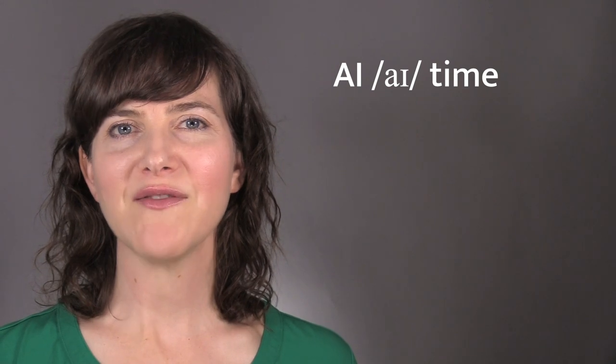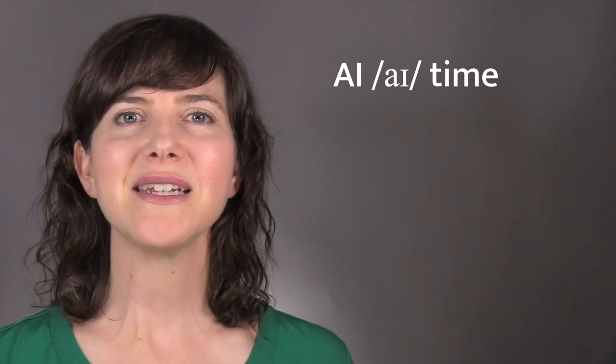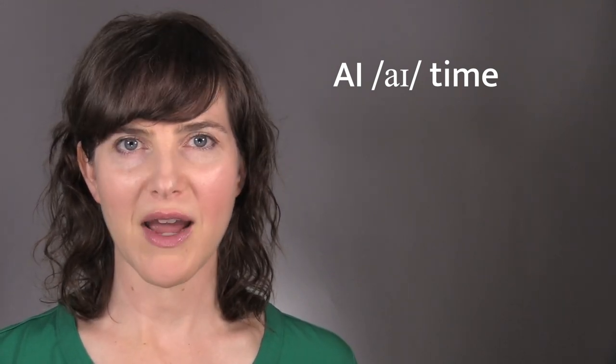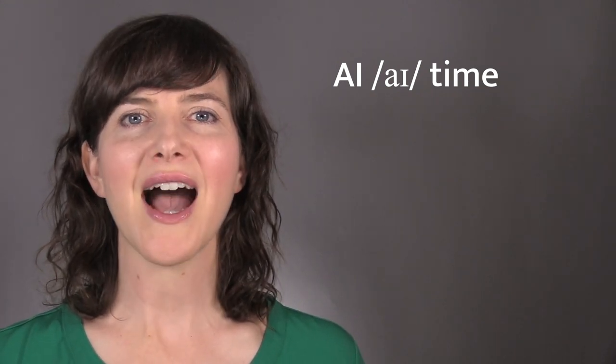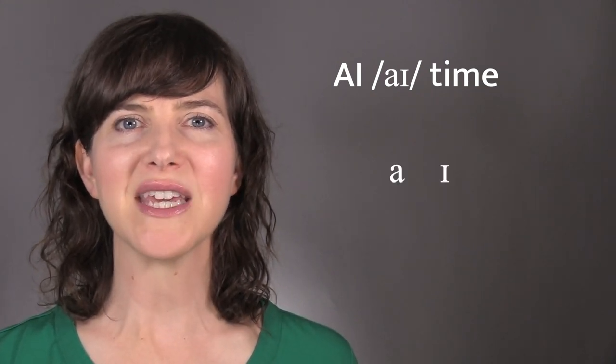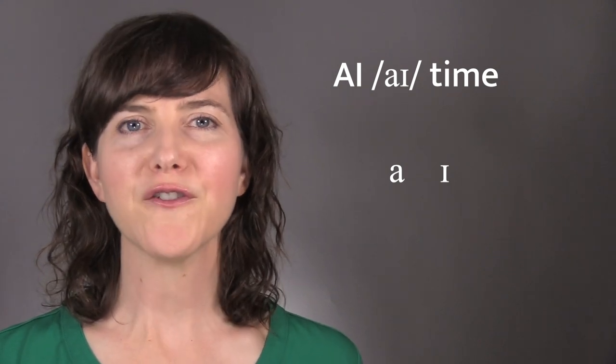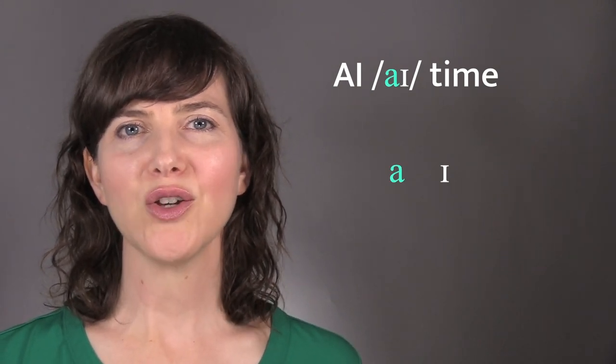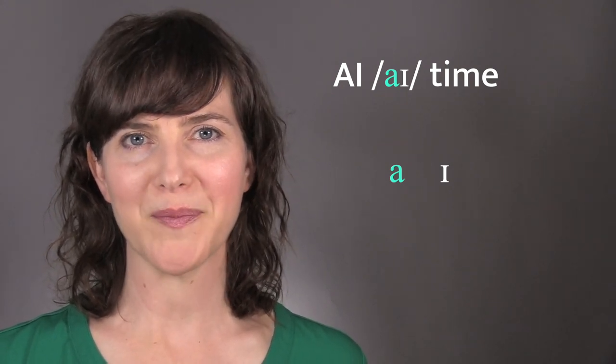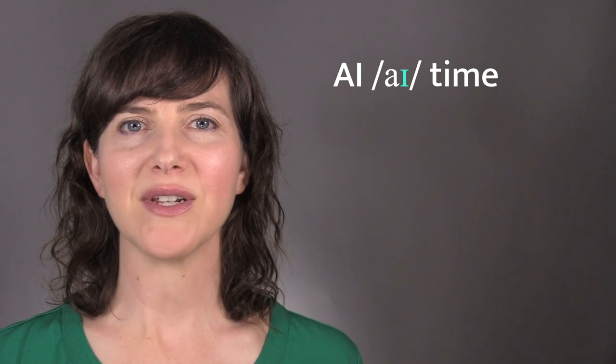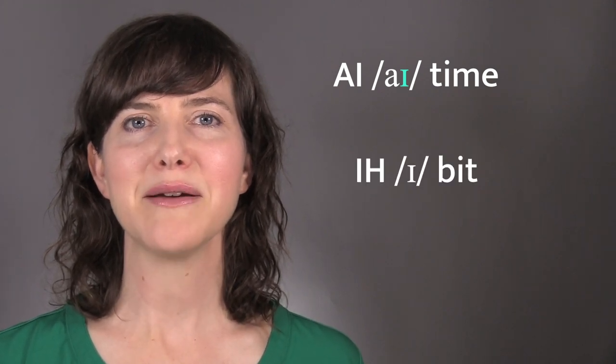When a vowel is part of a diphthong, sometimes it doesn't sound as pure as it does when it is said by itself. The I diphthong is made up of these two vowels. The first sound is not used in the standard American accent as a pure vowel, and the final sound is like in bit.